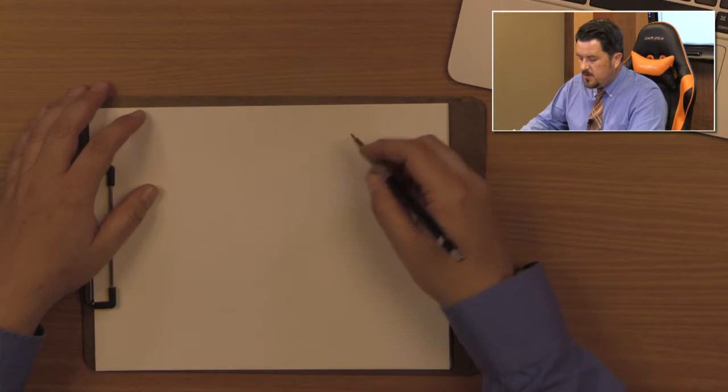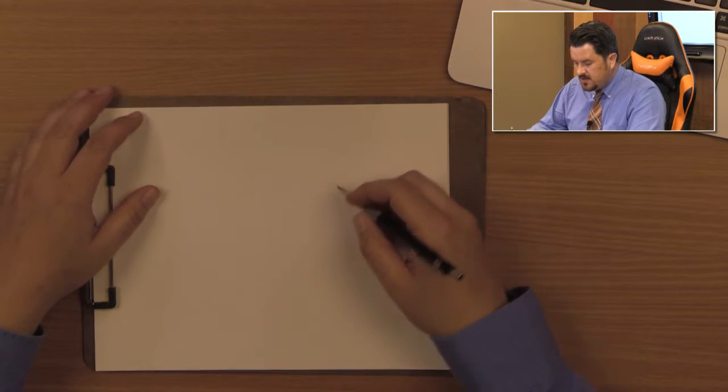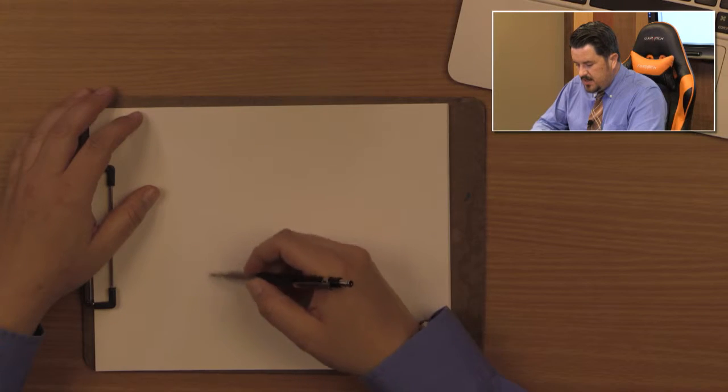So today we're going to try to use circles and incorporate into our drawing by drawing a hillbilly car. Now, the first thing I want you to do, remember the Marvel method, where we would use ovals and shapes and squares and things to create our drawing. We're going to do something similar to that today. We're going to start out drawing a 3D box.